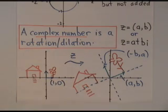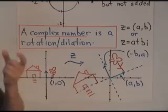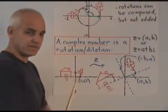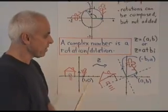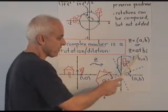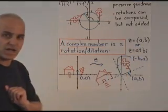So we'll say that this rotation dilation is a complex number Z, and we'll denote it by the vector AB. It's completely determined by AB. And an alternate notation is we'll say that Z equals A plus BI. So for now, this is just notation that represents this rotation dilation.